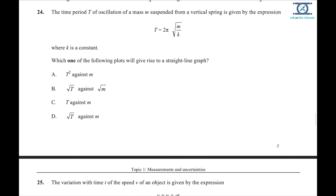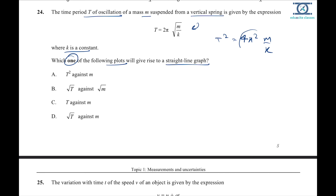Question 24: the time period T of a mass m on a vertical spring is given by an expression where k is constant. To get a straight line graph, square both sides: T² = 4π²m/k. Since 4π²/k is constant, T² is proportional to m. Plotting T² against m gives a straight line. Option A is the right answer.